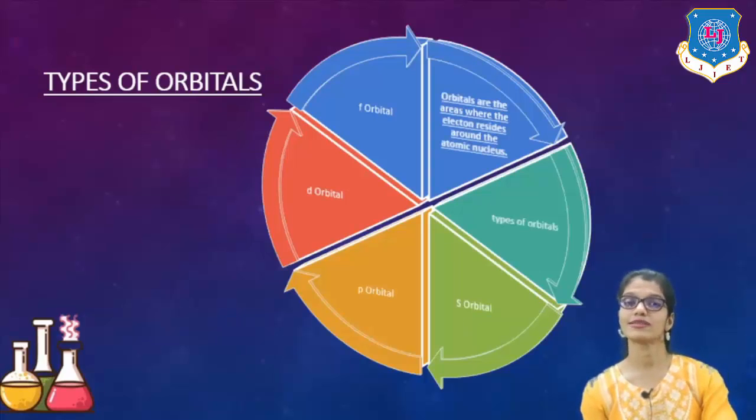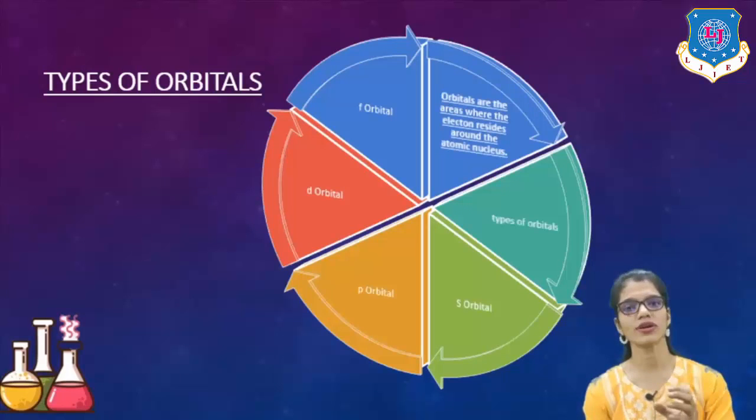Now we will study about the orbitals. Why do we have to study about the orbitals? To understand the chemical bonding, to understand the basic bonding between two different kinds of molecules or atoms, we have to understand what an atomic orbital actually is.